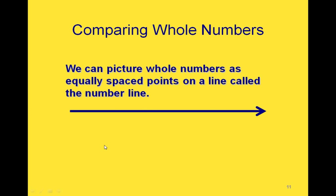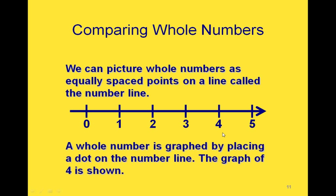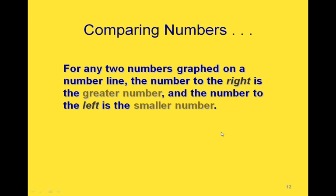Now if we want to compare whole numbers, we can picture them as equally spaced points on a number line. Here are some whole numbers that would be at the very beginning of our number line, and notice that the number line continues out to the right. If we want to graph a specific whole number, we put a dot where that number is on the number line — so this would be the graph of the number 4. When we graph two numbers on a number line, the number on the right is the greater of the two, and the number on the left is the smaller of the two.